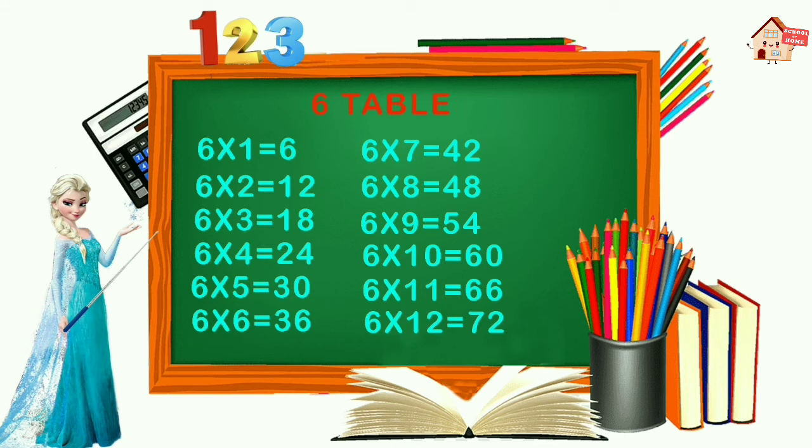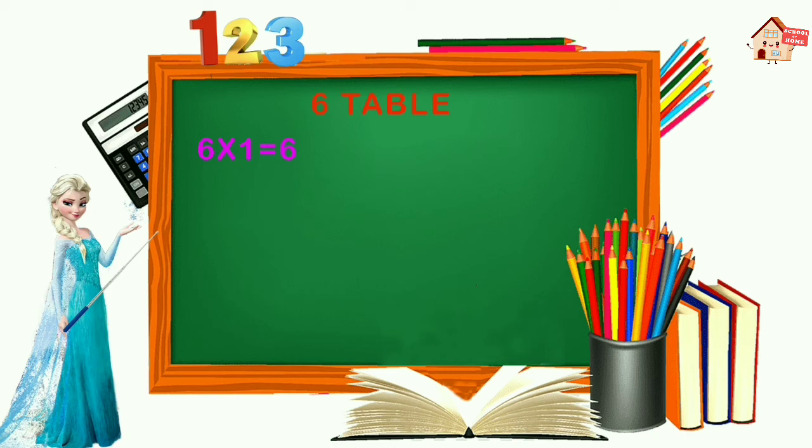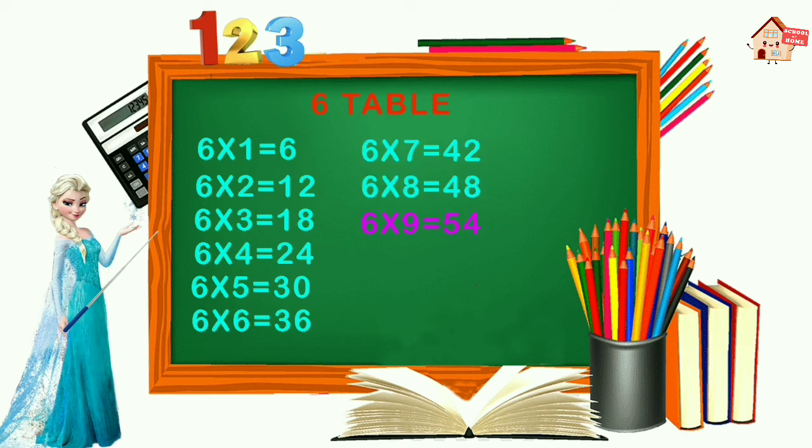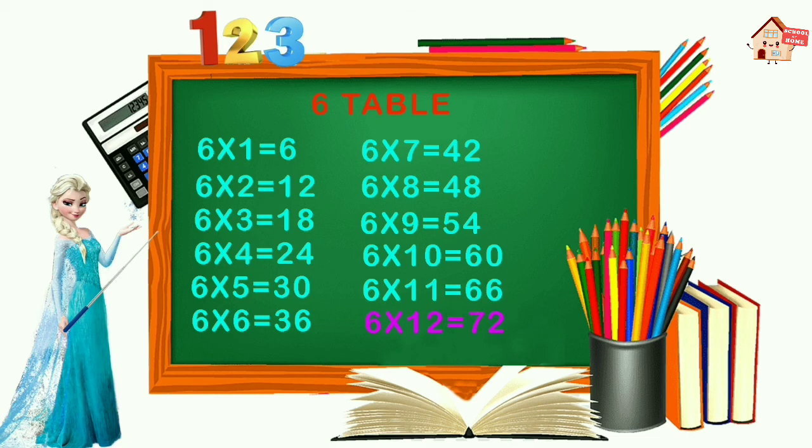Let's sing table of 6. 6 ones are 6, 6 twos are 12, 6 threes are 18, 6 fours are 24, 6 fives are 30, 6 sixes are 36, 6 sevens are 42, 6 eights are 48, 6 nines are 54, 6 tens are 60, 6 elevens are 66, 6 twelves are 72.